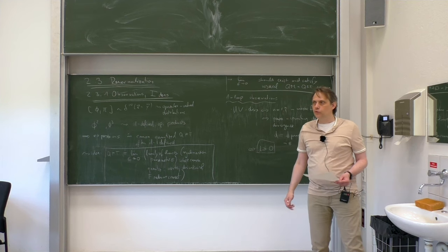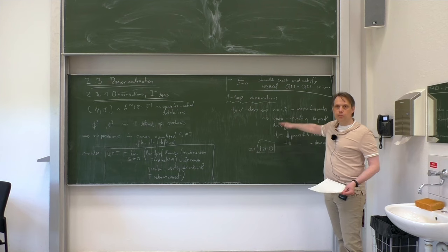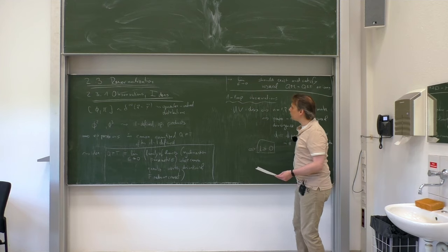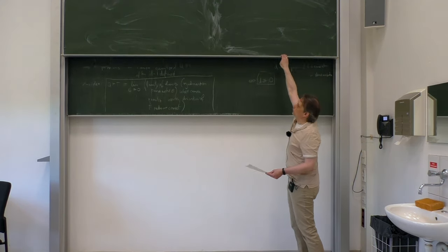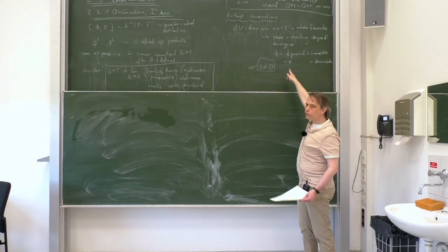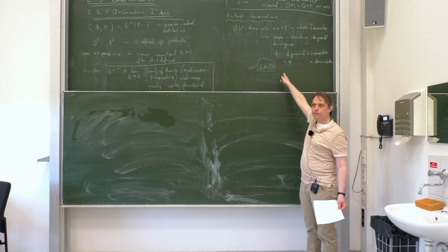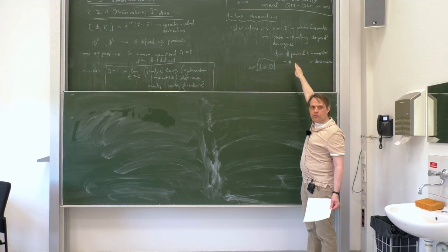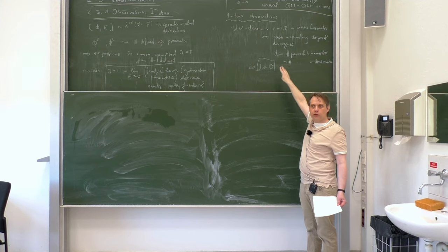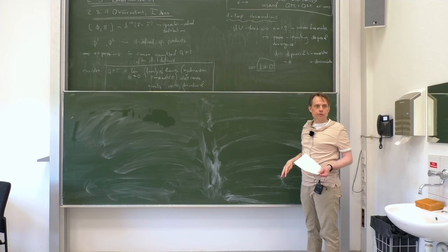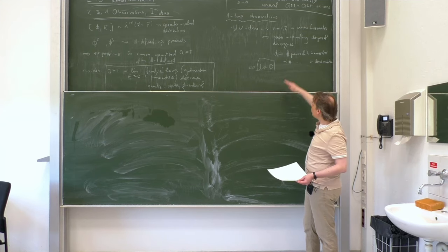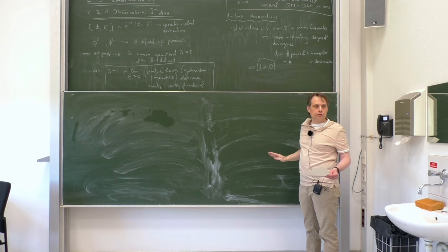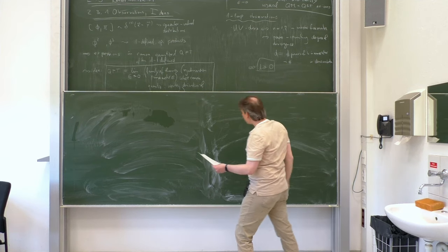This degree of divergence obtained by counting powers of integration momentum is the only criterion required. You can use the same definition at the multi-loop level, simply counting the overall number of loop momenta in numerators minus denominators to get the degree of divergence for multi-loop integrals. However, for multi-loop integrals it is not obvious from our discussion whether the same criterion holds—that is not clear at all. At one-loop it is obvious from what we have said.